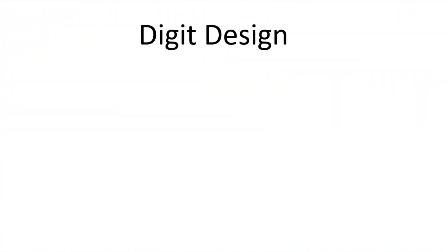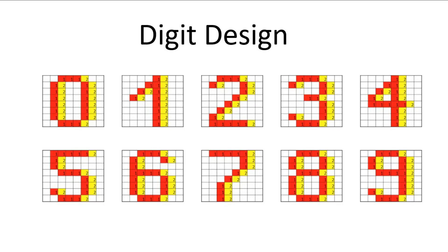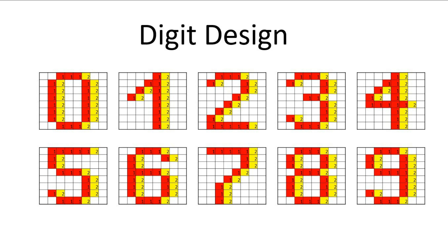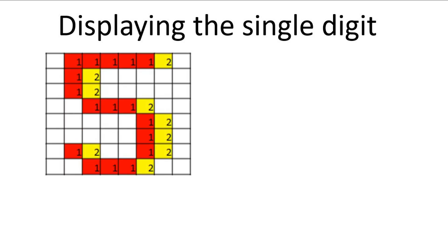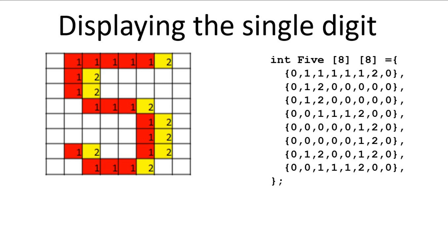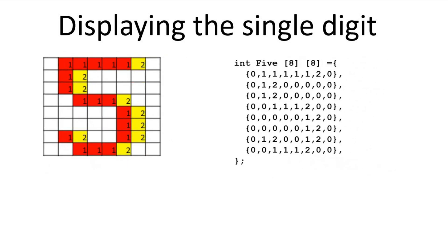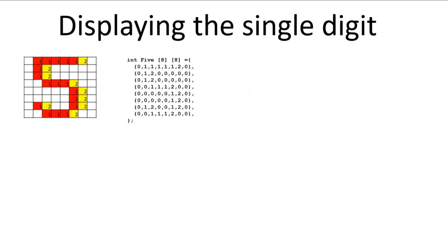Now that we have the case, we have to come up with a digit style. I thought we could have digits with color shading that would look more or less like this. For each digit we create an 8x8 array corresponding to the pixel layout. In that array, 0 stands for background, 1 stands for the digit, and 2 stands for the shading outline of the digit.